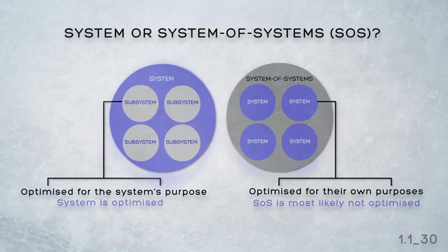The distinction between system of systems and systems becomes quite blurred. So in this course, we'll leave it alone. We're focusing on systems whose elements are all subsystems — systems that are genuinely systems in their own right.